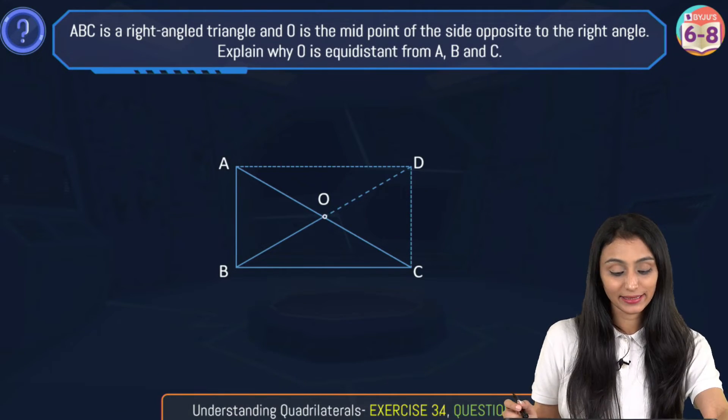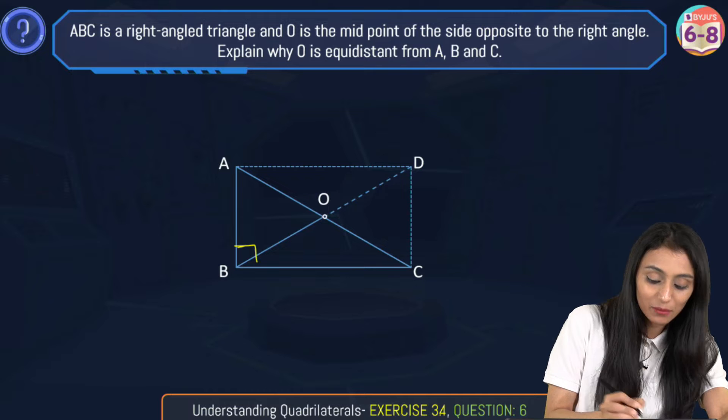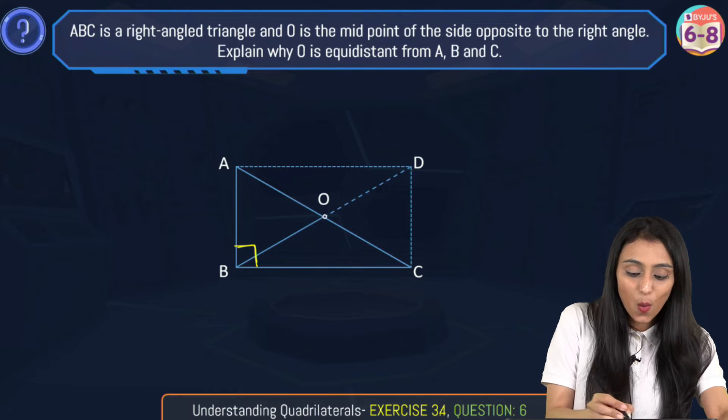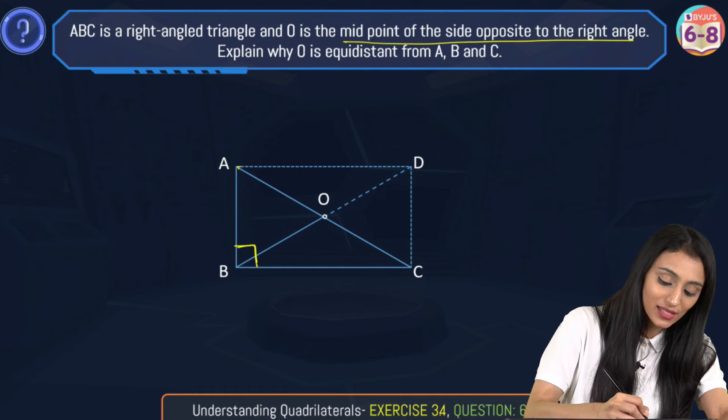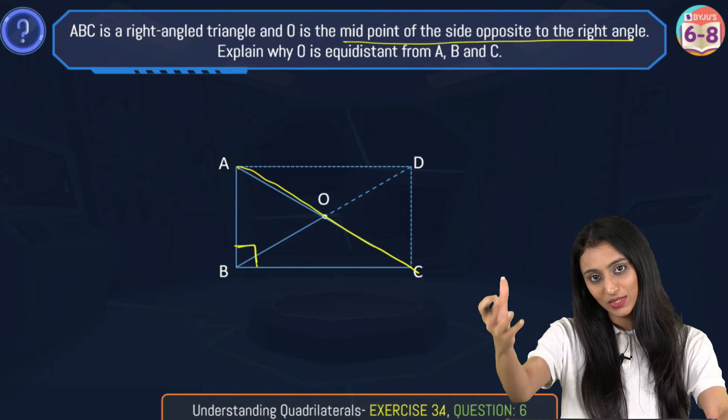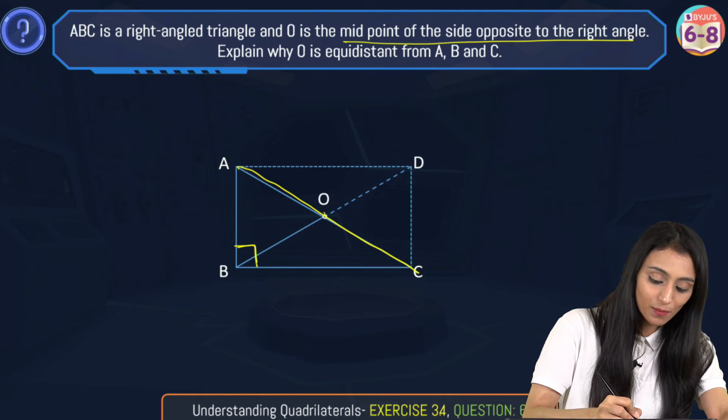ABC is a right-angle triangle. Since it is a right-angle triangle, that means this angle is 90 degrees over here. O is the midpoint of the side opposite to the right angle. So this is the hypotenuse, which is the side opposite to the right angle. O is the midpoint of it.